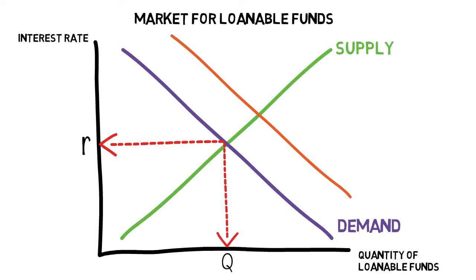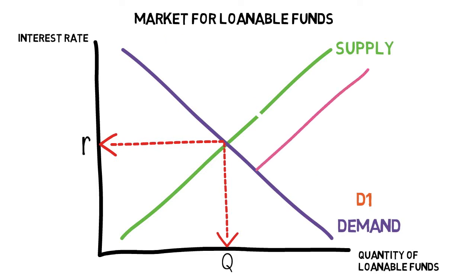We can also look at what happens if there is an investment incentive in the economy — for example, a tax reduction for firms to invest. In this case the demand curve will shift to the right, which would increase the interest rate on the market and increase the quantity of loanable funds.